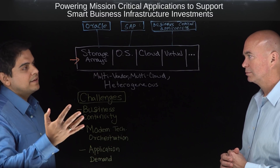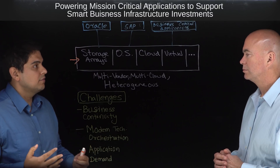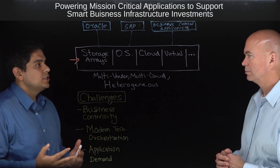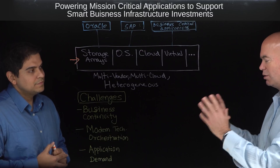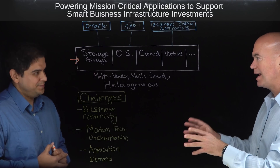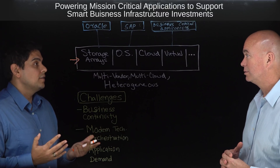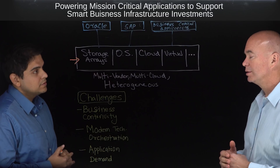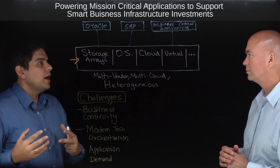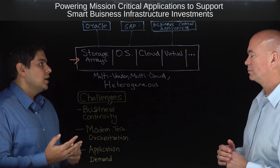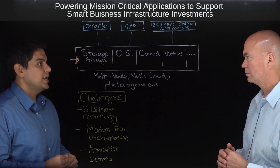We're left with IT environments struggling with three challenges. The first is around business continuity — your application, regardless of whether it's running in a physical, virtual, or cloud environment, needs to have downtime minimized. It needs to be up and available. A big change we've seen is that it used to be three applications that just had to be up, and now almost every application — 3,300 applications in many cases — has to be up.